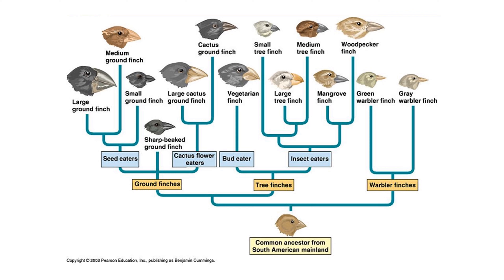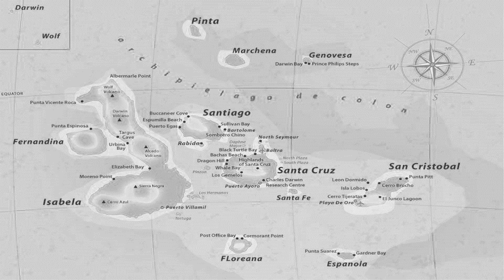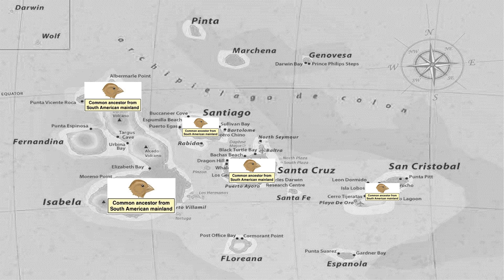The last common ancestor of Darwin's finches is likely to have arrived from South America a few million years ago. Over time, they migrated to the different islands, and the different populations then became isolated and consequently subjected to different environmental pressures, such as differences in resources and habitats.